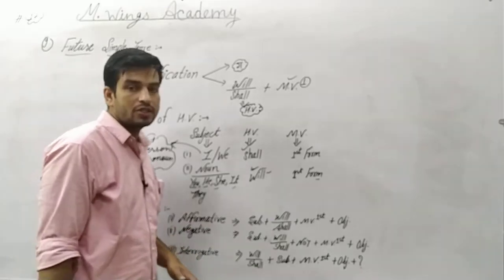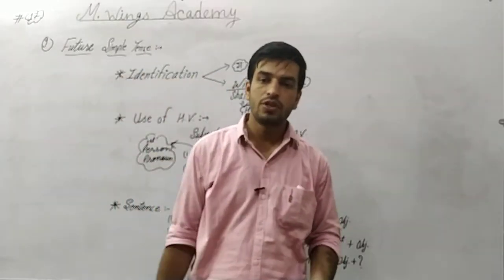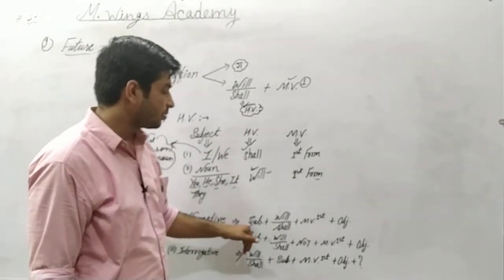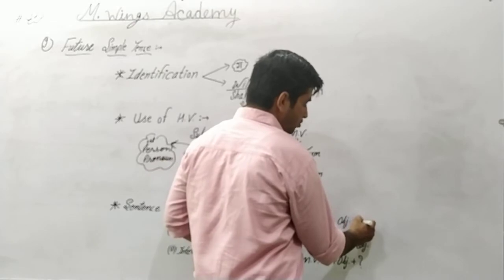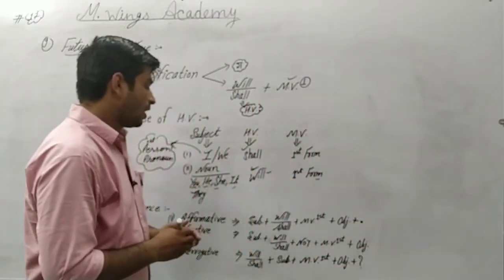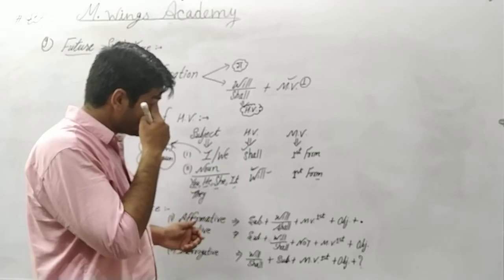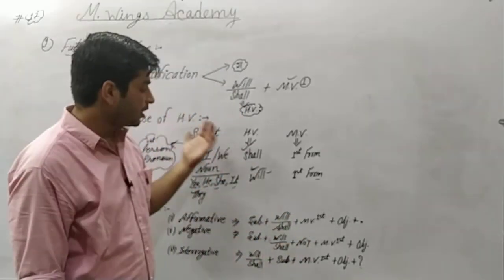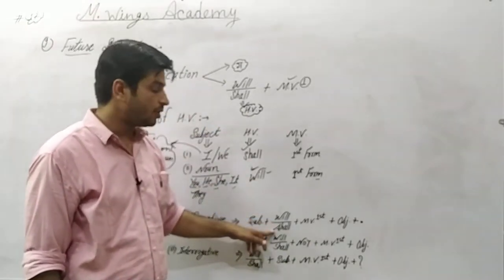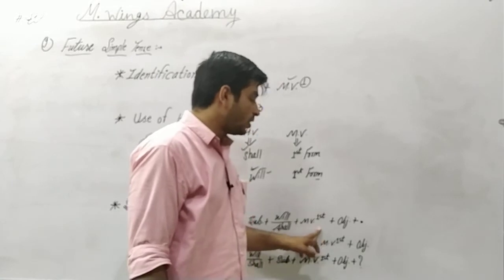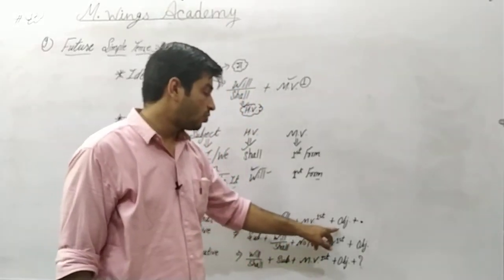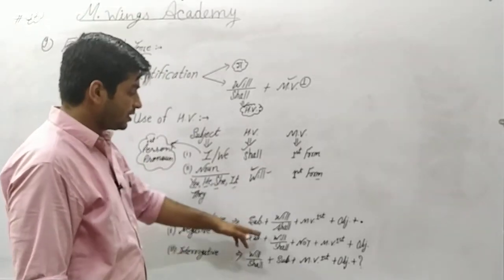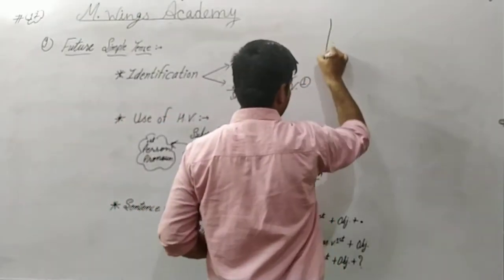We have to talk about the basic structure of each sentence type. For an affirmative sentence, the structure is: Subject + will/shall + main verb first form + object, and the sentence ends with a full stop.